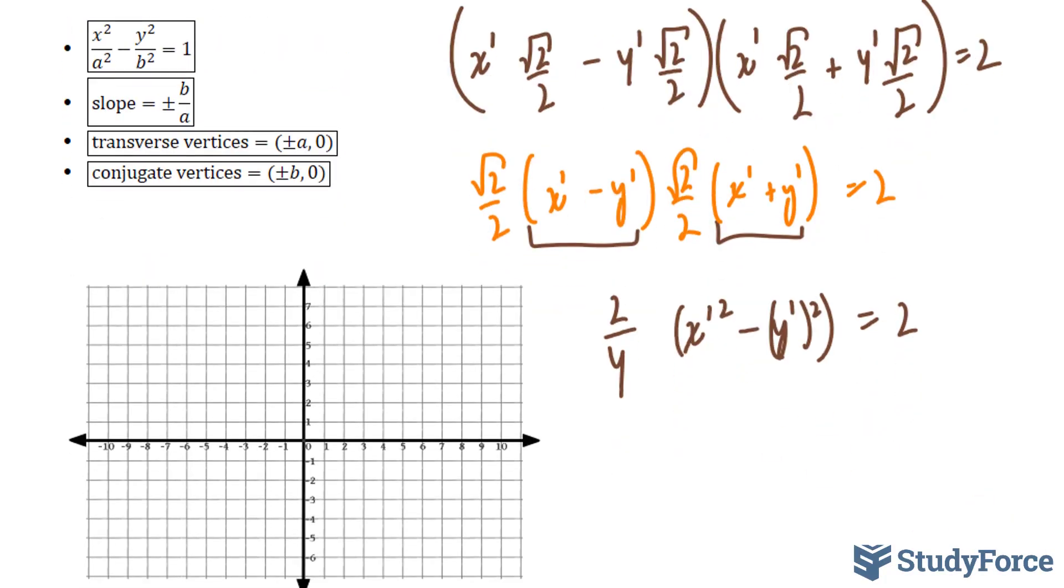Now let's continue. We have 2/4, that's the same thing as saying 1/2. And if I multiply both sides by 2 at this point, I'll end up with x'² - y'² = 4.